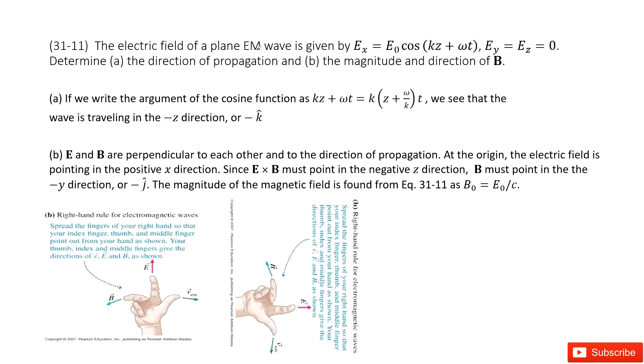The electric field is given. We can see EY and EZ are zero, so the Y component and Z component are zero. Only the X component is there, which means the electric field travels in the X direction.